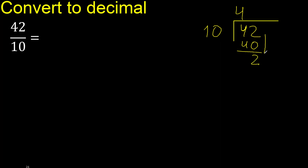There is no number that goes down, therefore complete. Always complete with 0. Here, point — 10 multiplied by which number?